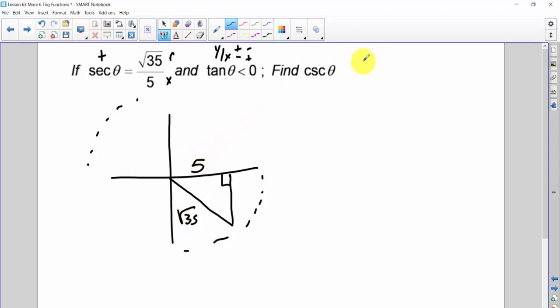I need cosecant, which is r over y. We have the r value, which is root 35. Now I just have to find my y value, and I'm going to get that by using Pythagorean. So r squared, or 35, is equal to 25, plus the y squared. 10 is equal to y squared, and the square root of 10 is equal to y.